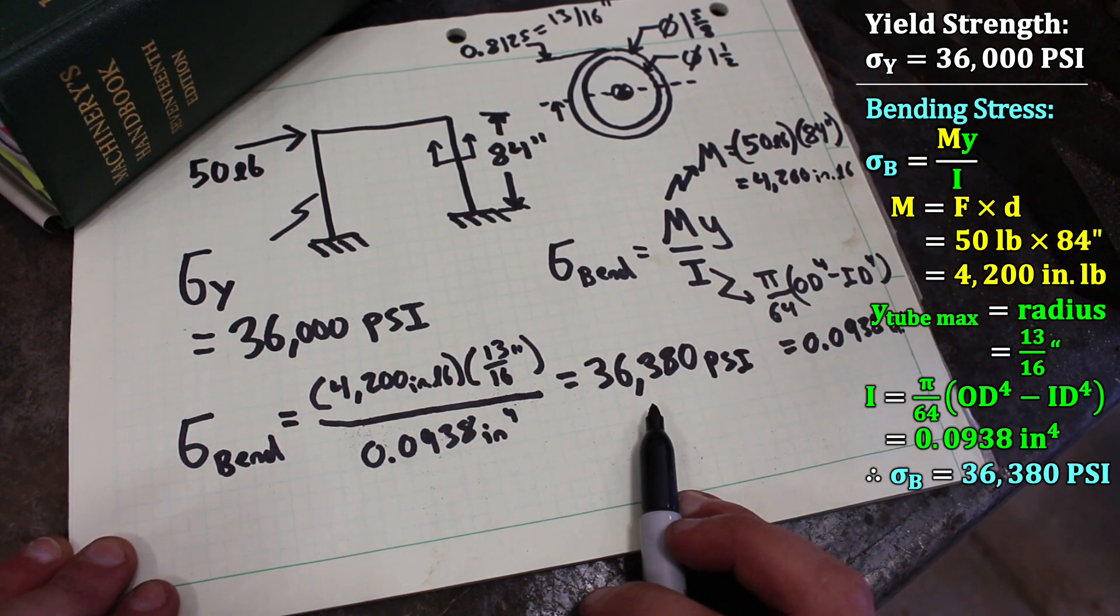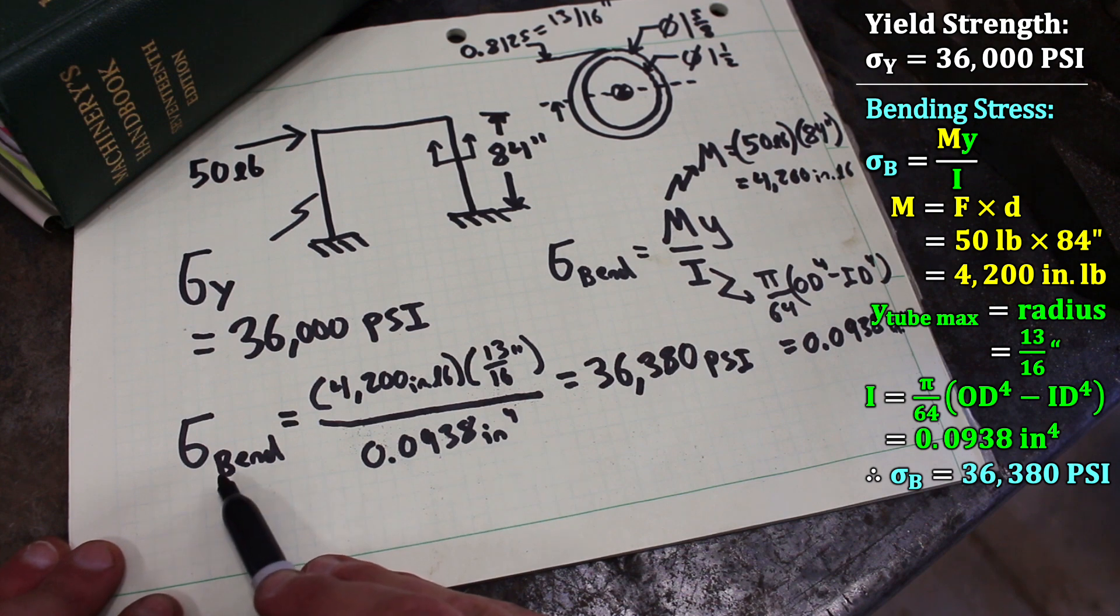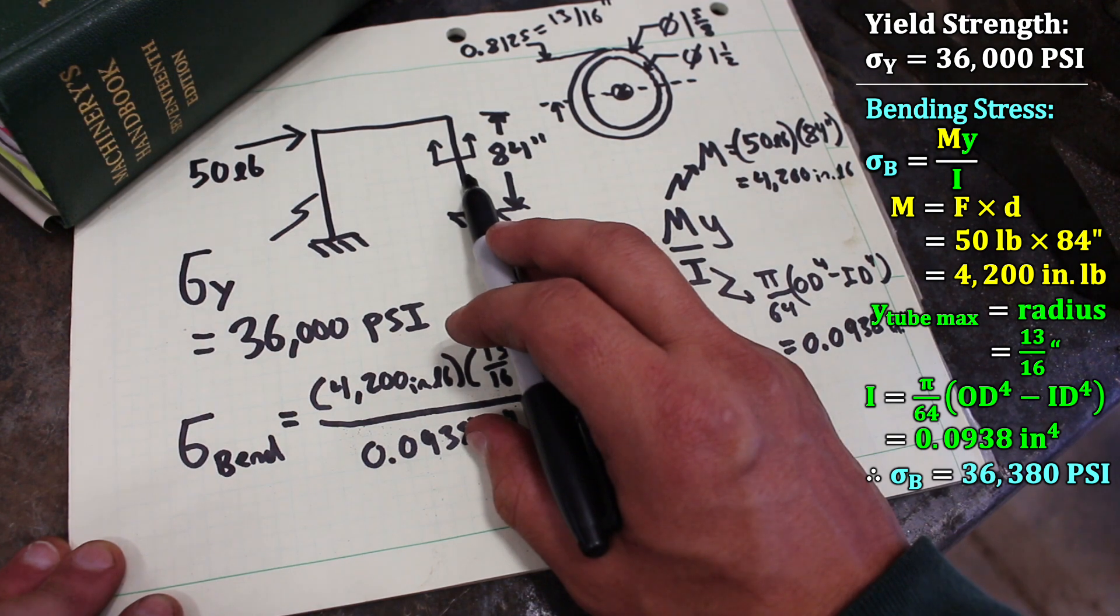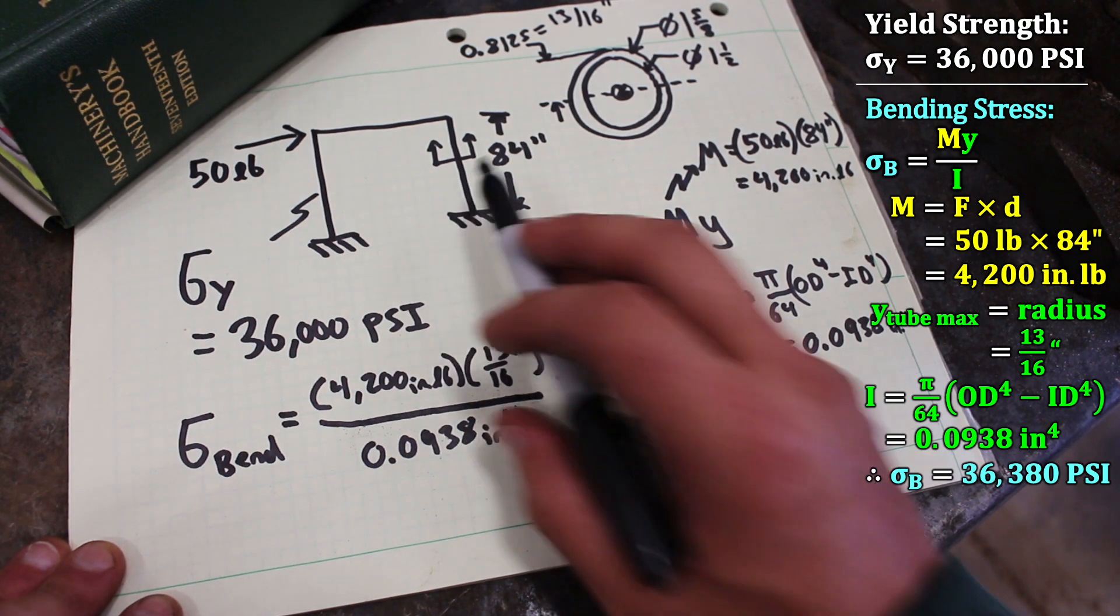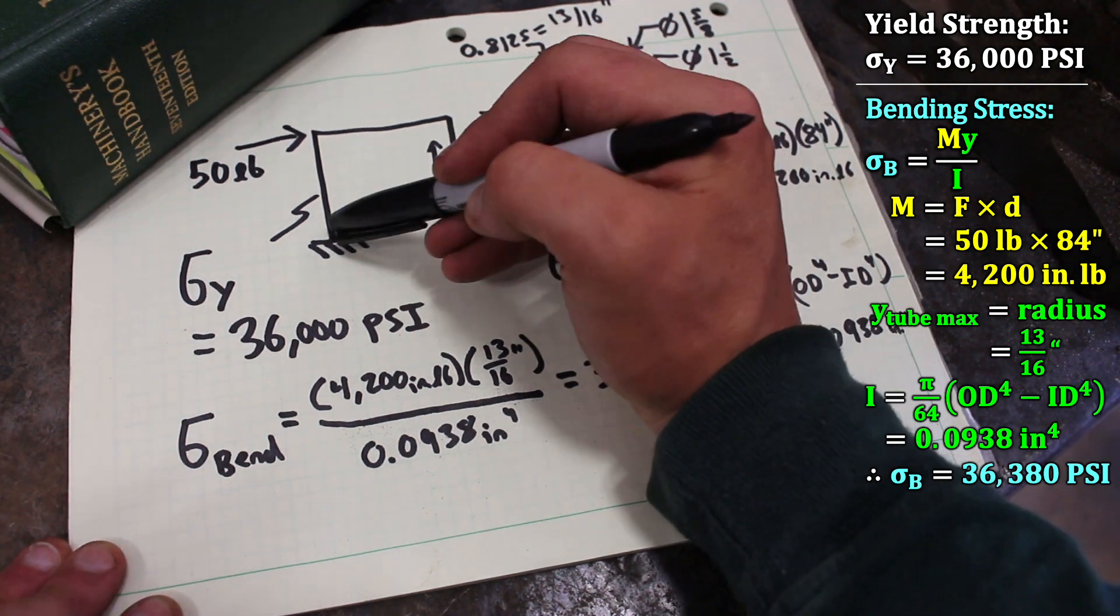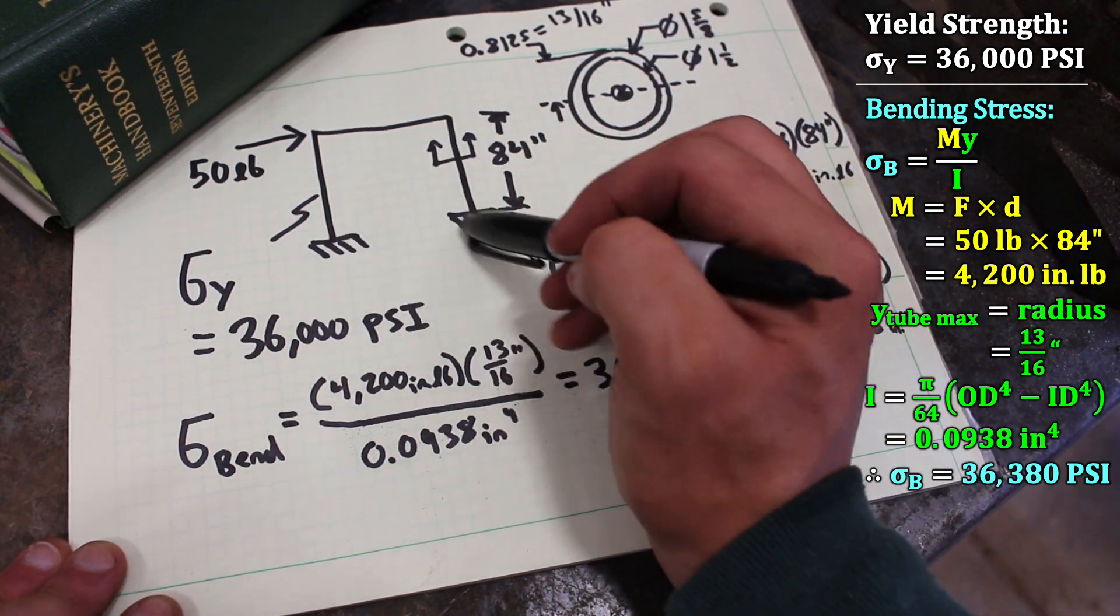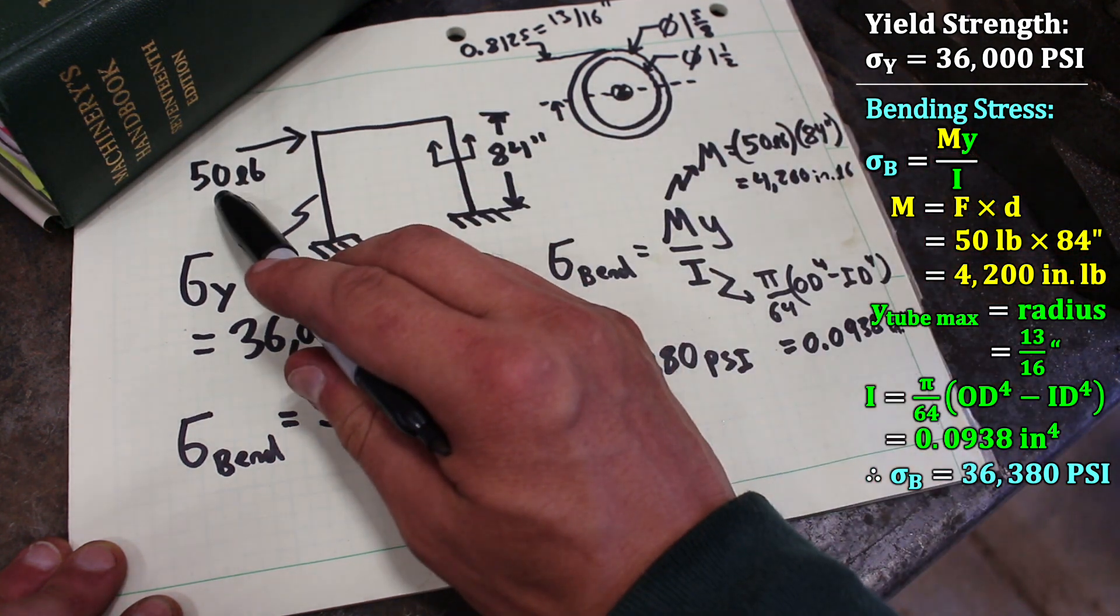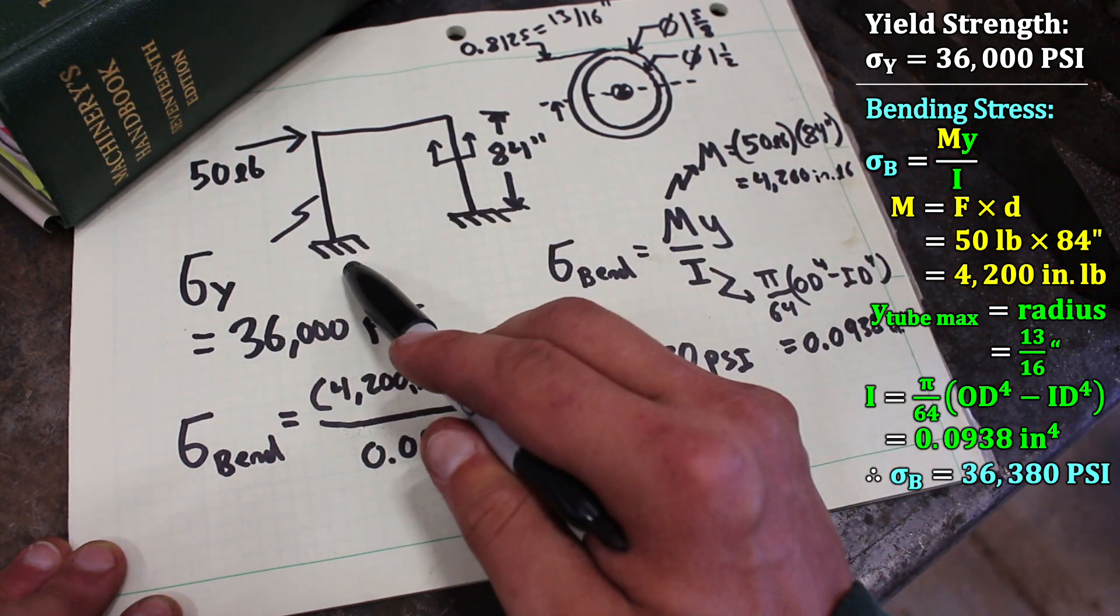Now this is a condition for failure because the bending stress is greater than the yield strength, which means that the strength of the member is too weak to withhold the stress. Of course there are four legs, but on rugged terrain it's very possible that only one wheel will be making contact with the ground at any given moment. So we need to assume this 50 pounds is going into only one leg.